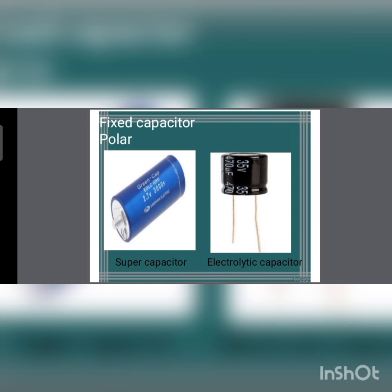In the electrolytic capacitor, it is made up of two metal plates whose positive plate is covered with an insulating oxide layer. This insulating layer acts as the dielectric. On the second cathode terminal, electrolyte is used.